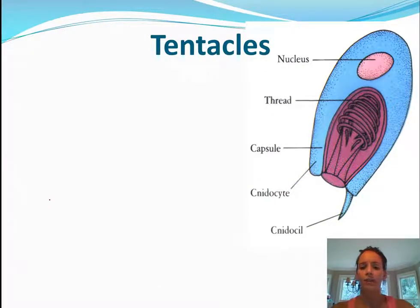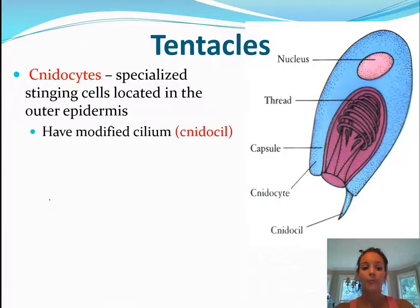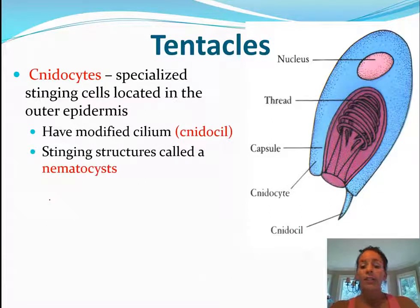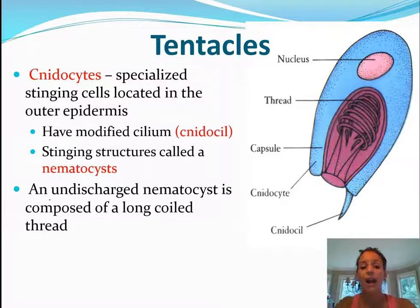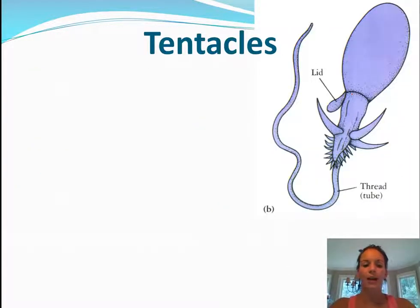Now let's talk about the tentacles — that's what stings you when you think of jellyfish. They have nematocytes, which are stinging cells. This picture shows what a nematocyte looks like. They have a modified cilium, kind of like a tail, and they have stinging structures called nematocysts. The undischarged one is coiled up inside, and once they sting you, that thread comes out.